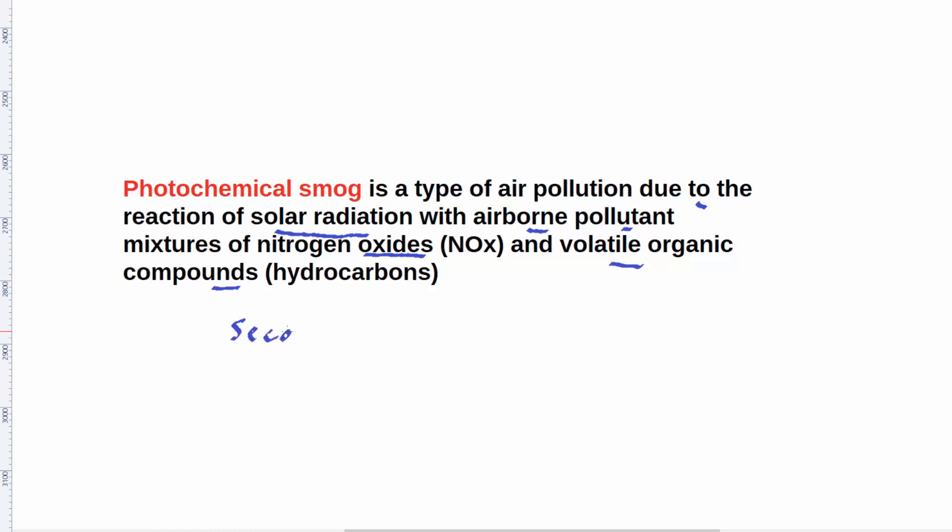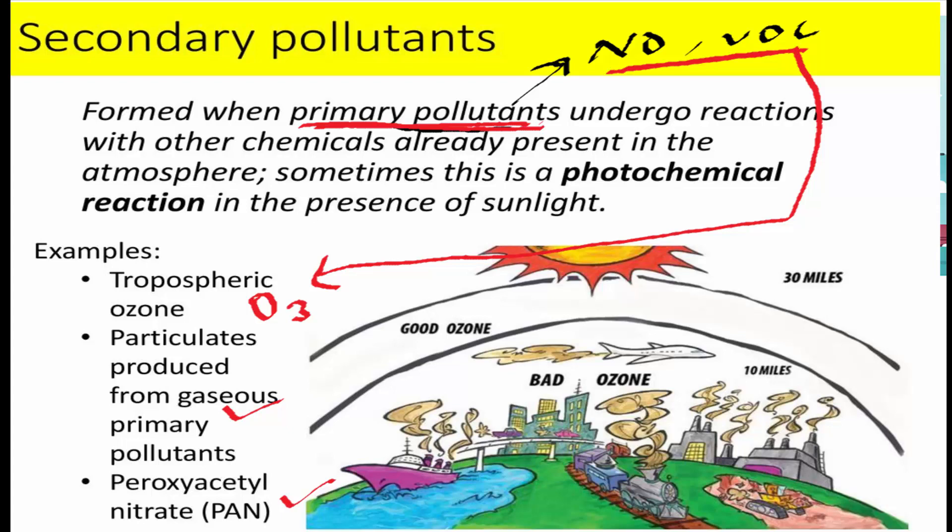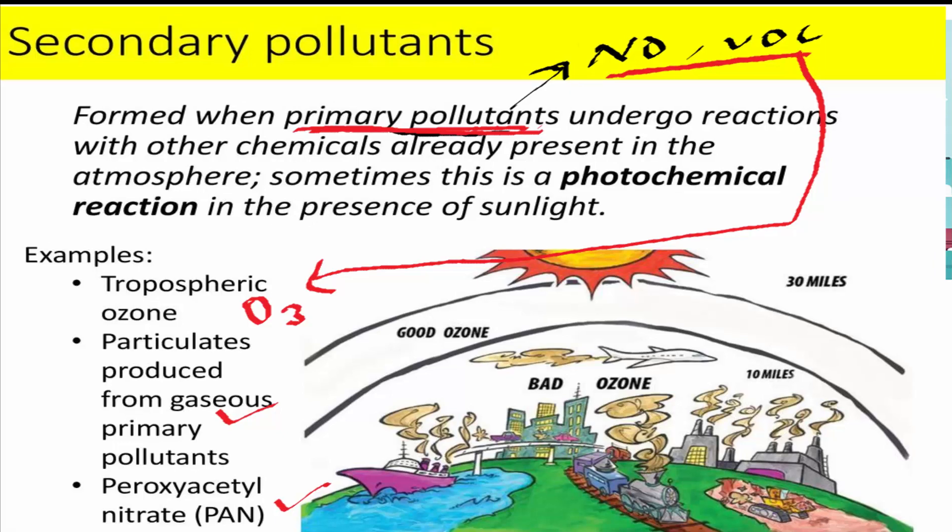These nitrogen oxides and volatile organic compounds are emitted from vehicles due to burning of coal, wood, paint fumes, etc. These are primary pollutants. And when these primary pollutants undergo reactions with other chemicals already present in the atmosphere, they form secondary pollutants.